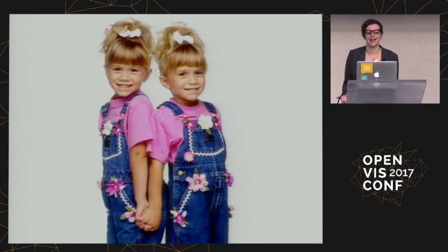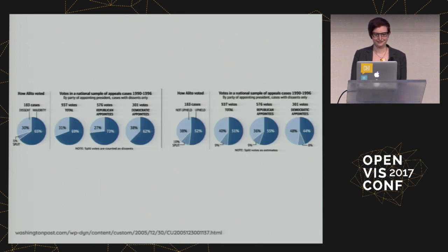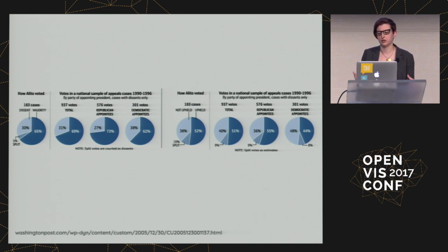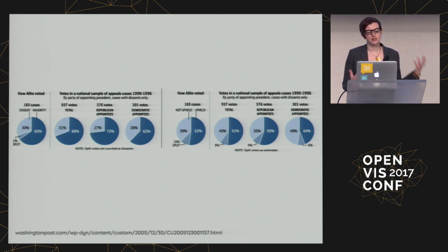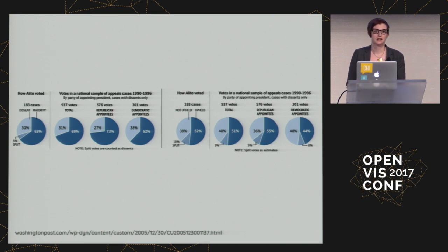However, your graphs shouldn't look exactly the same, like identical twins. This is an old graphic from the Washington Post where all of these pie charts are basically the same visually except for the numbers. You can't tell which charts are related and it's easy to gloss over all of them, because it doesn't highlight the unique and interesting aspects of the data — it all just kind of feels the same.